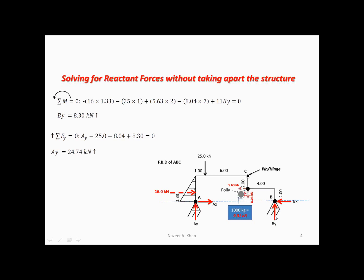When we crunch the numbers, we'll come out with 8.3 kilonewtons acting up. It is a positive number, which means that our assumption of this force acting up is correct. So now we know this force. Let's go and set up the next equation.